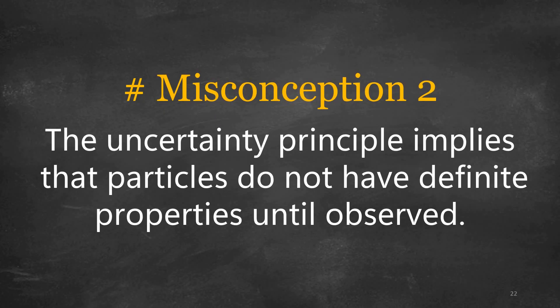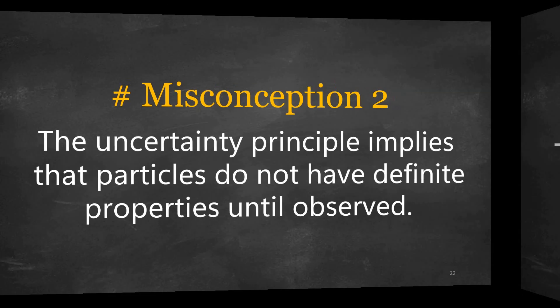The second misconception is that the uncertainty principle implies that particles do not have definite properties until observed. The uncertainty principle introduces an inherent limit to our knowledge of certain properties of particles — it does not imply that particles lack definite properties until measured. Properties exist in a state of superposition, exhibiting multiple possible values simultaneously. When a measurement is made, the wave function collapses and the particle assumes a definite value for the measured property.